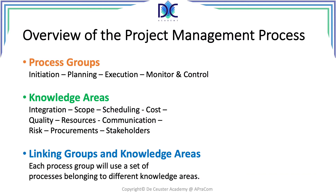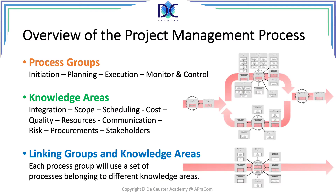When we look at the project management process, we talk about what we call process groups. We have initiation, planning, execution, monitoring, and control. On the right-hand side we see an overview of the different processes conducted during those steps. We talk about the knowledge areas, and the rectangles with the dotted circle around them are what we call integration processes, which are part of the integration knowledge area.